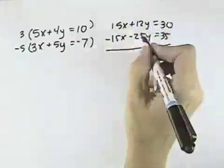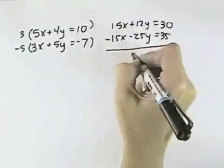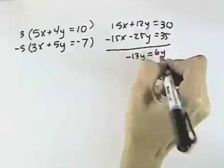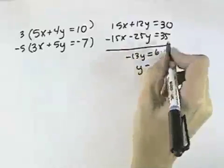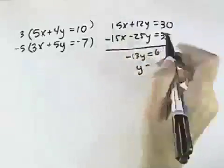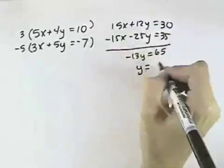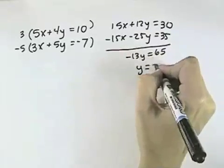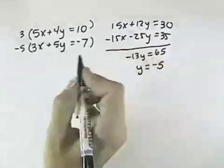So that when I add these together, the x's drop out. The y's, I have negative 13y equals 65, and dividing both sides by negative 13, 65 divided by negative 13 will be negative 5. So y equals negative 5.